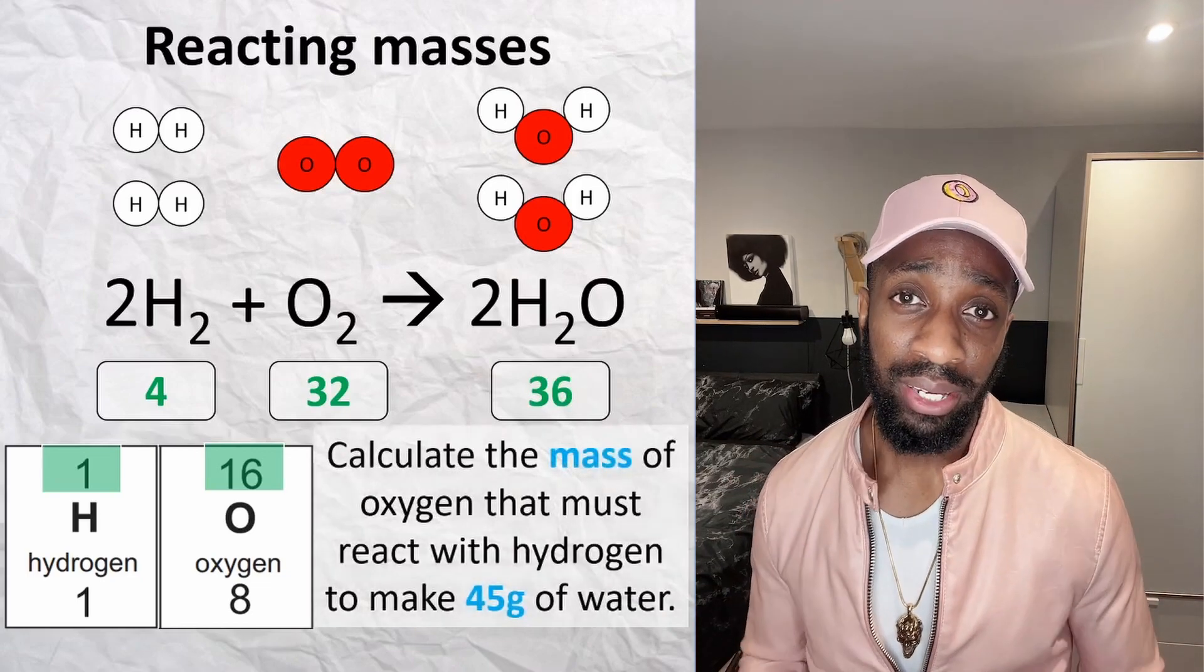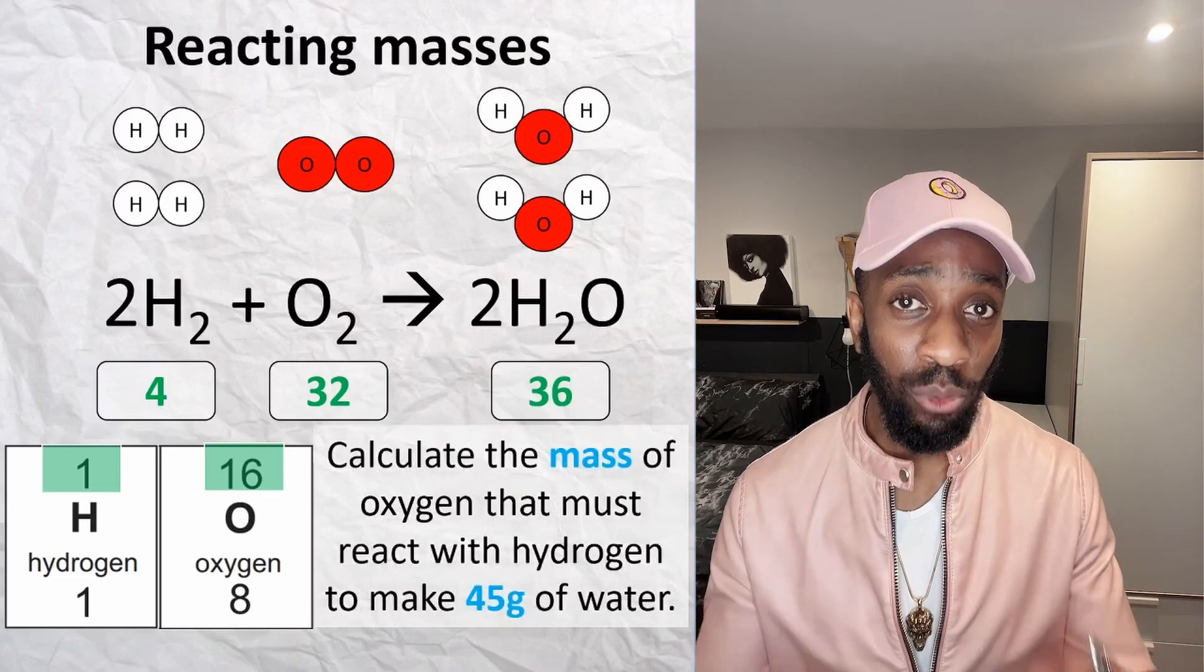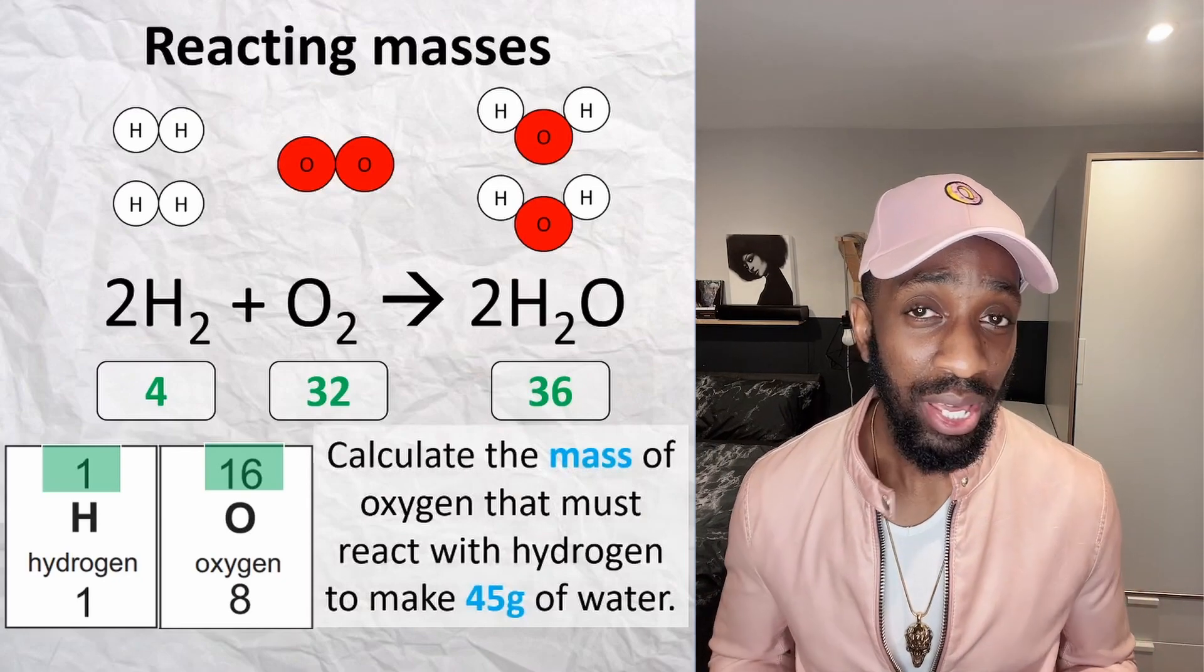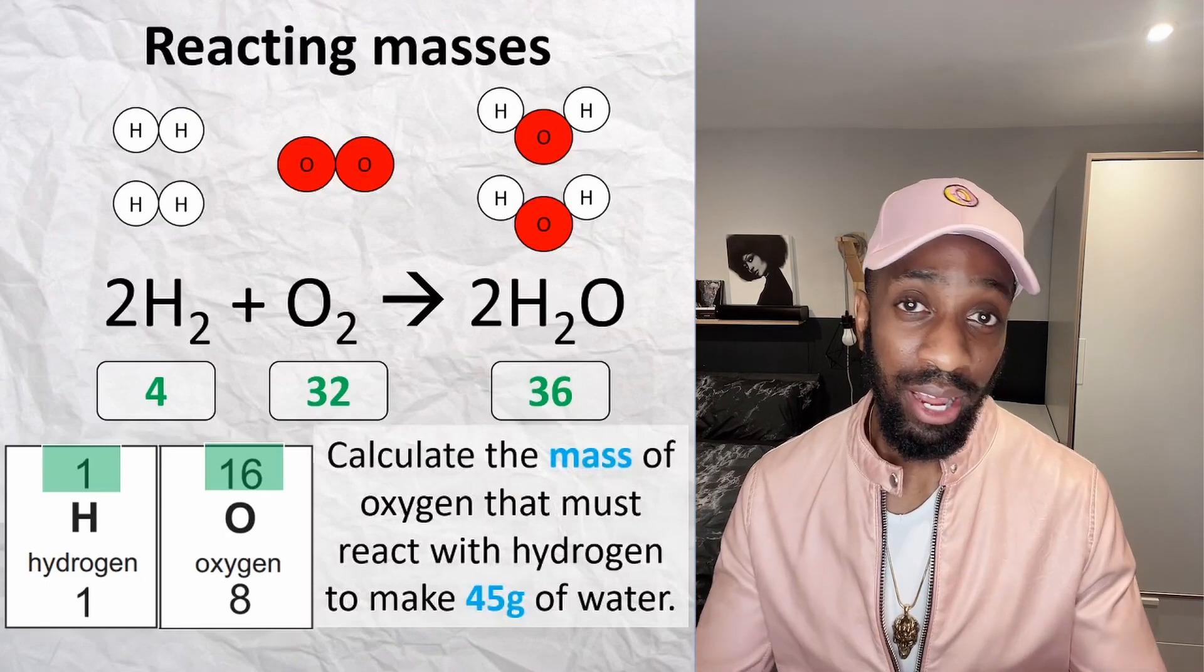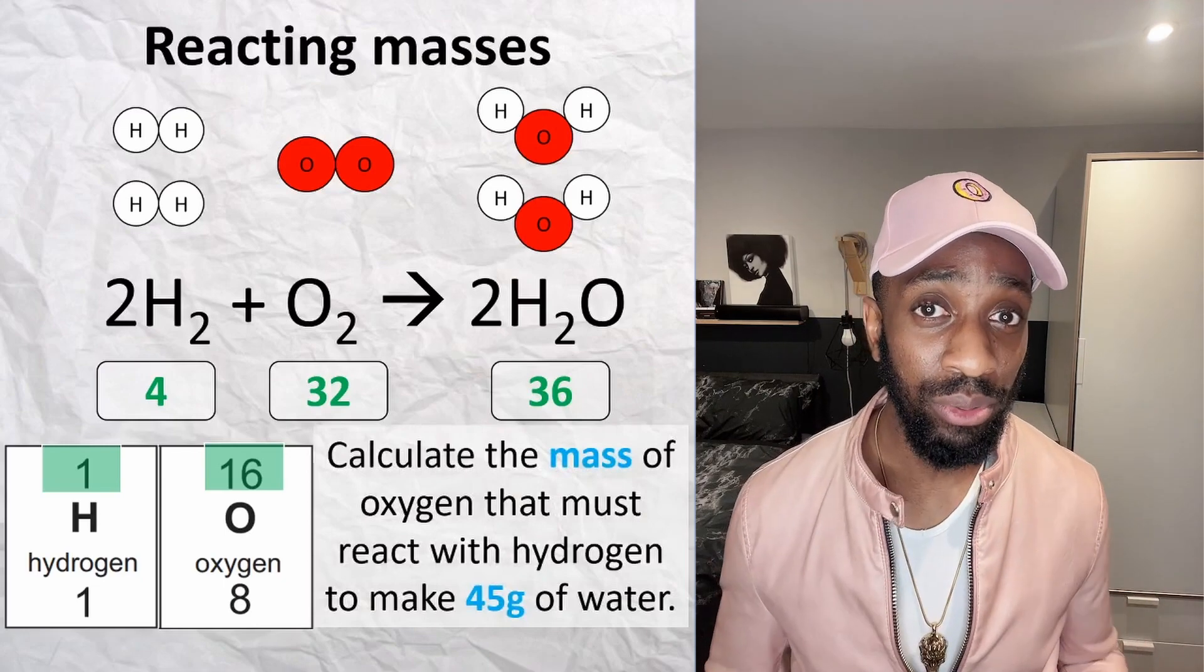In this question, it's asking us to calculate the mass of oxygen that is needed to react with hydrogen to produce 45 grams of water. This method I'm going to show you is, from what I know, the simplest way of working this out. Get your pen or pencil ready and have something to write with, and also have a calculator next to you so you can follow the steps as I go through this.